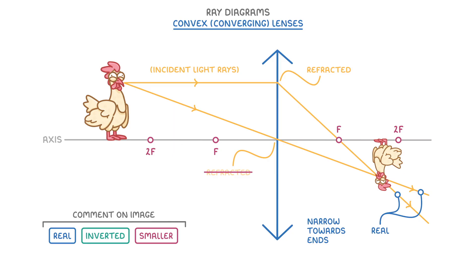Bear in mind that in your exam, you won't be given a complex object like our chicken. Instead, you'll normally be given something simple, like an arrow. And just make sure that you always draw your rays from the very top of the arrow, like we have here, to make sure that you get all the marks.